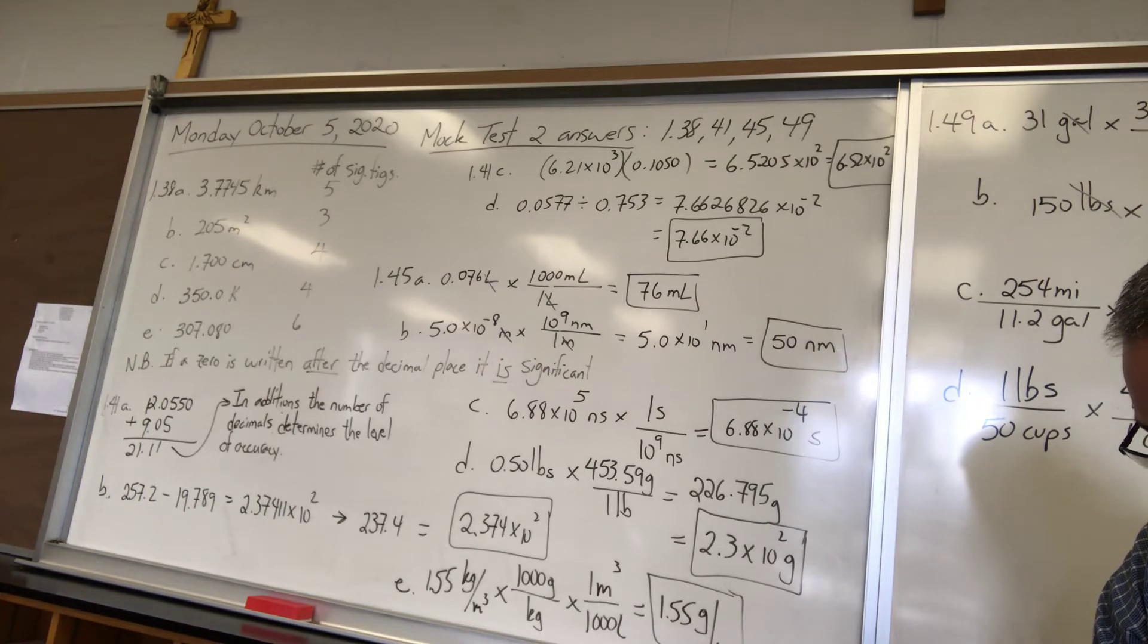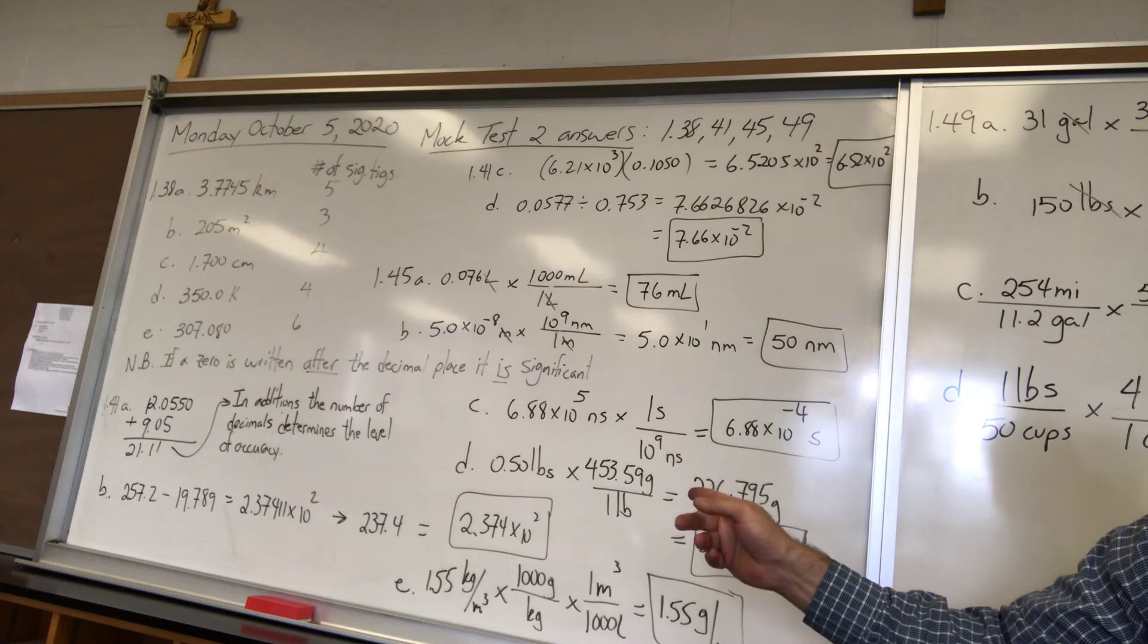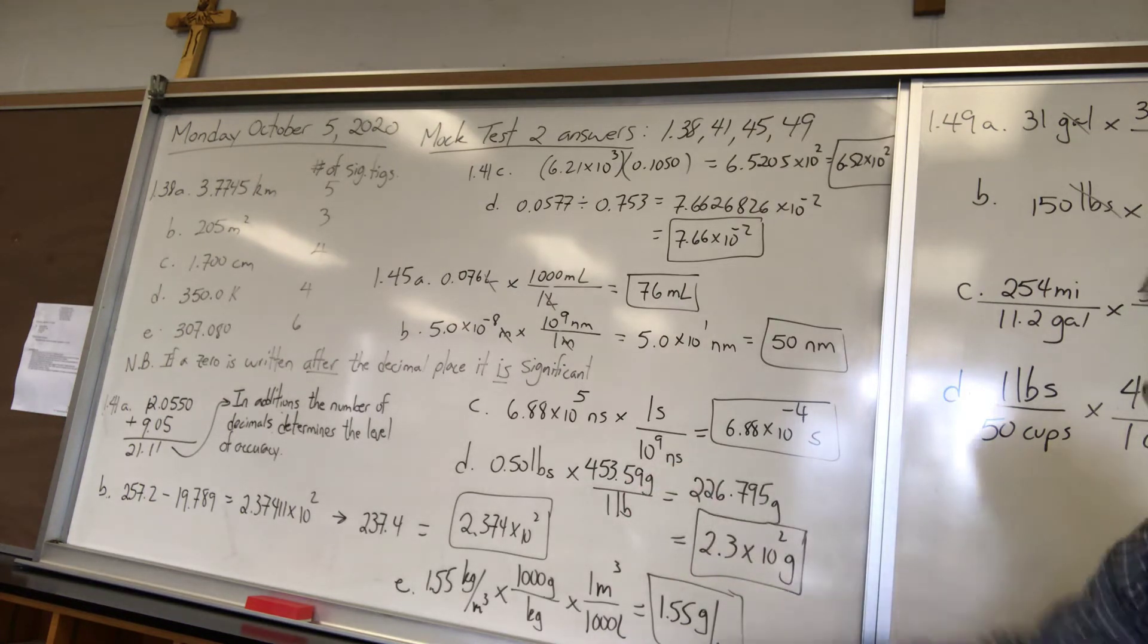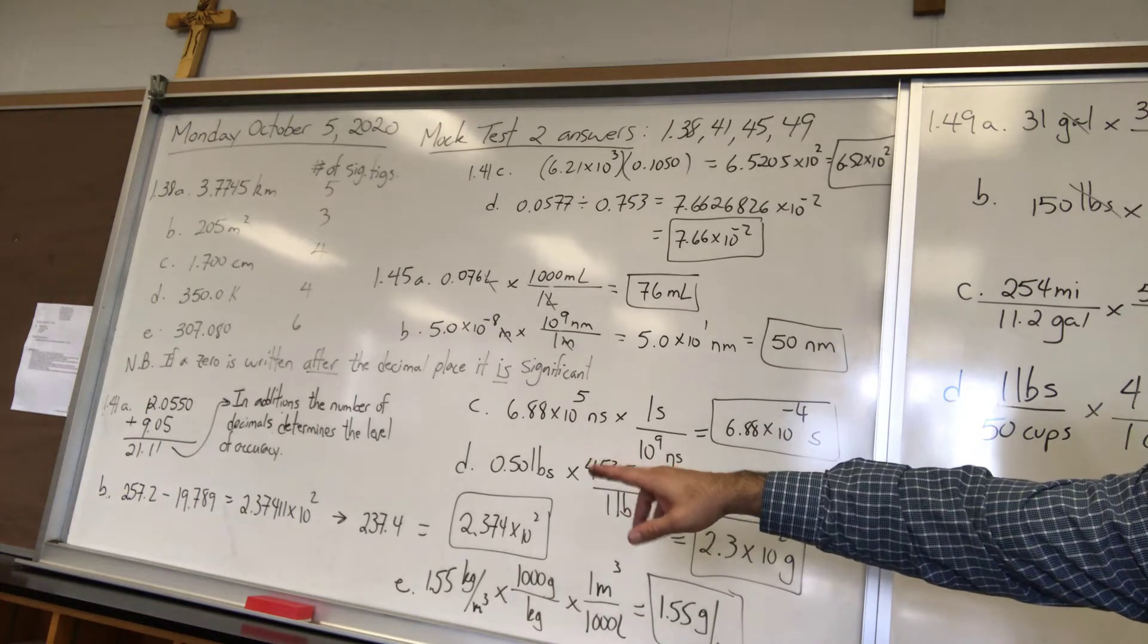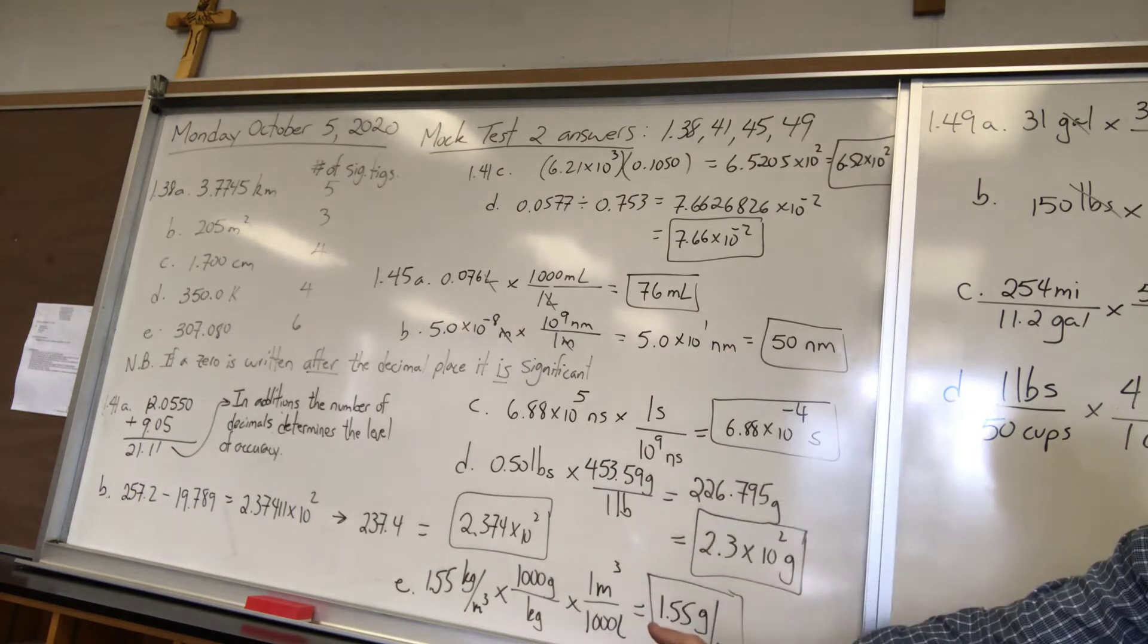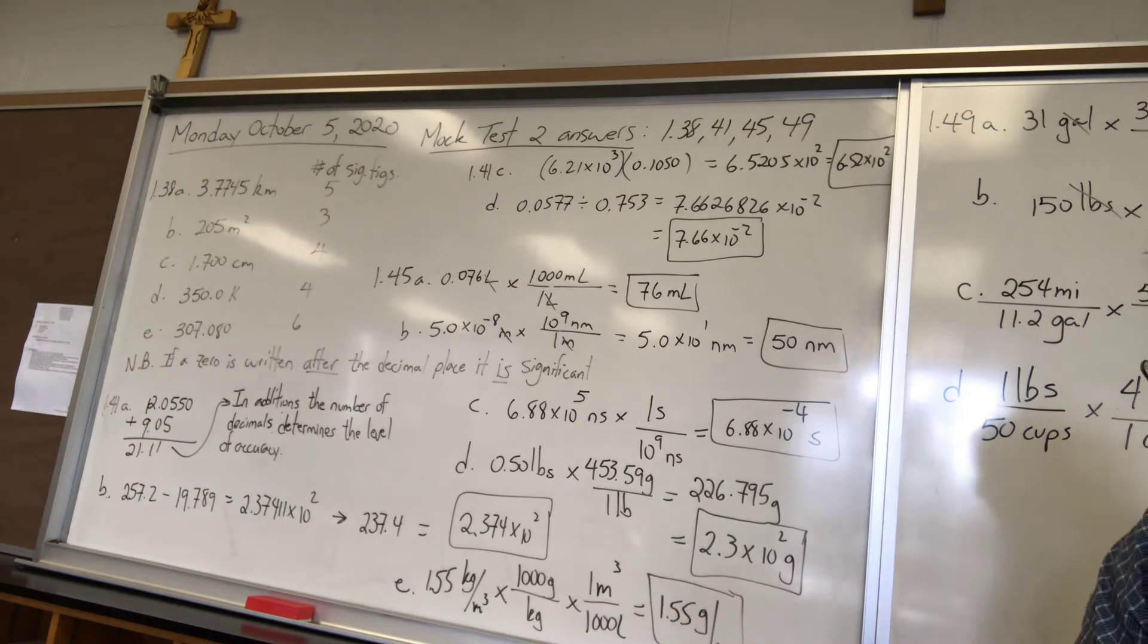B. It shows 257.2 minus 19.789. There's one decimal place minus something with three decimal places. Your answer can only have one decimal place and that's what you can see. I rounded it to there even though the calculator readout would say 237.411. I would cut it off at one number after the decimal in that case for an addition or subtracting.